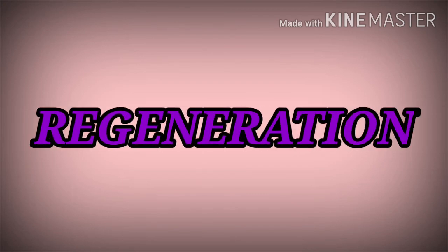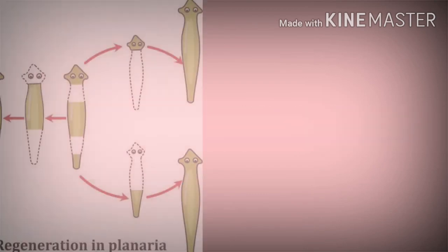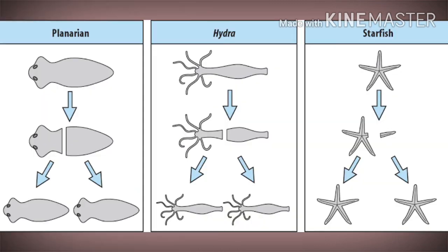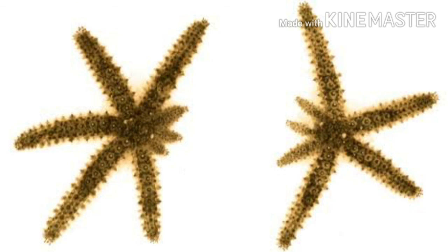Coming to regeneration, the ability to generate an entire new individual from a fragment of the body is called regeneration. Some animals like hydra and planaria multiply by regeneration. Some animals like starfish and salamander can also replace an injured or lost part through the process of regeneration.